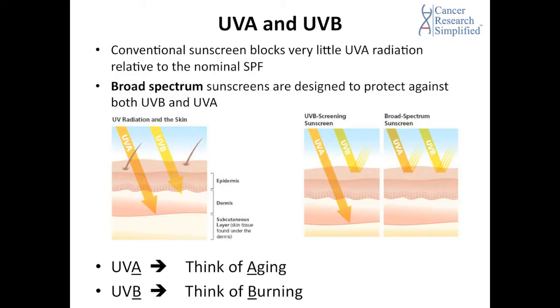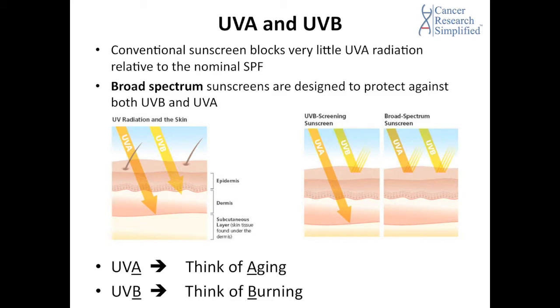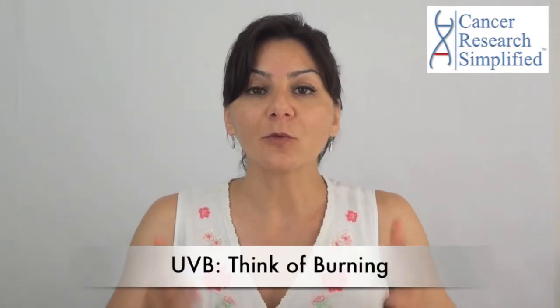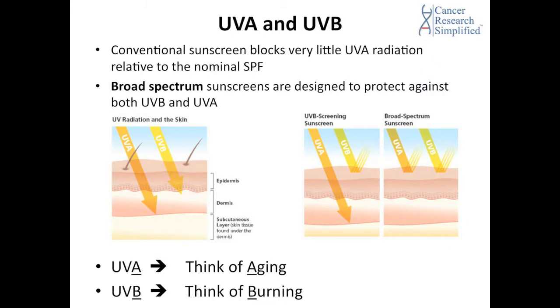Now let's talk about UV radiation A and UV radiation B. Sunscreens usually have an SPF factor, which is typically calculated based on protection from UV radiation B. UVA and UVB both penetrate deep into the skin, however at different levels. Usually sunscreens do not contain any blockage towards UVA, so it is highly recommended to use a broad spectrum sunscreen which protects you from both UVA and UVB. Think of UVA as associated with aging and UVB as associated with burning — both may eventually cause skin cancer.